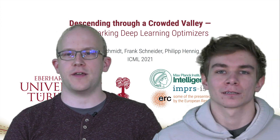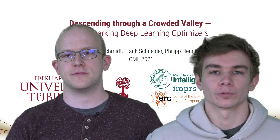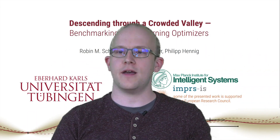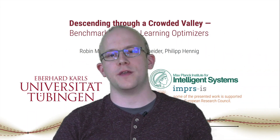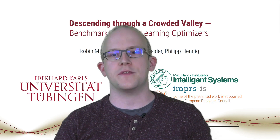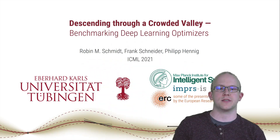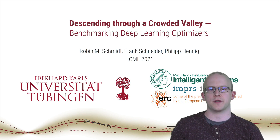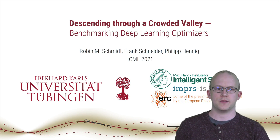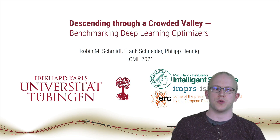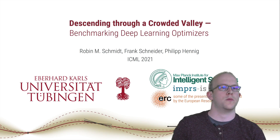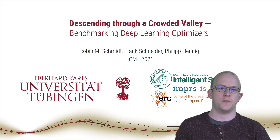Welcome, my name is Frank Schneider, and I'm Robin. Today I will explain what we learned from benchmarking 15 deep learning optimizers over more than 50,000 training runs. This is a summary of our paper 'Descending Through a Crowded Valley: Benchmarking Deep Learning Optimizers,' which is joint work together with Robin Schmidt and Philip Hennig.